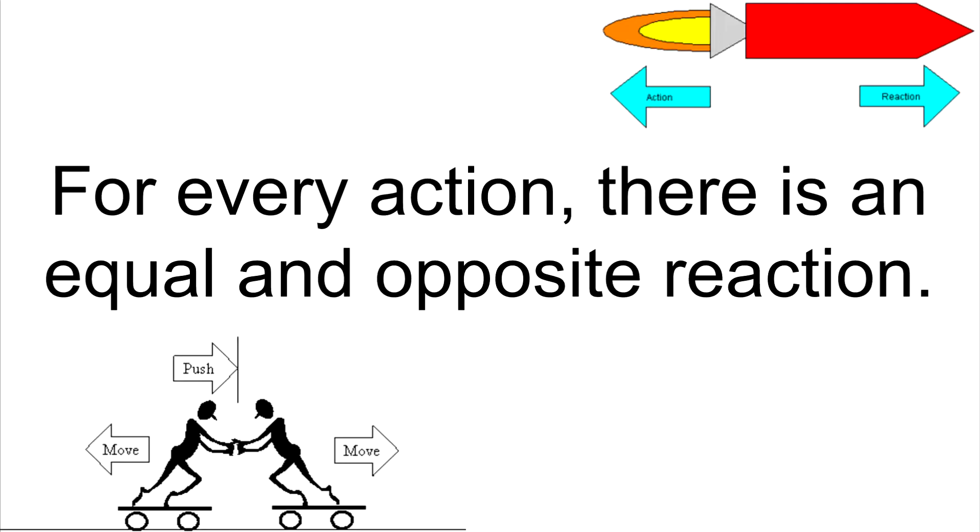Newton's third law states that for every action, there is an equal and opposite reaction. This means that in every interaction, there is a pair of forces acting on the two interacting objects. The size of the forces on the first object is the same as the size of the forces on the second object, and the directions are opposite. Forces always come in pairs, equal and opposite action-reaction force pairs.